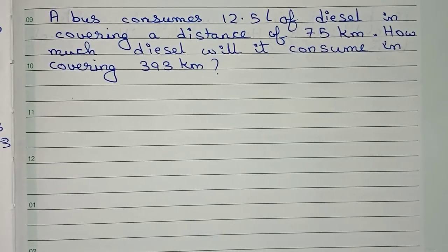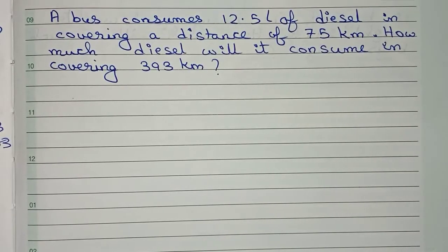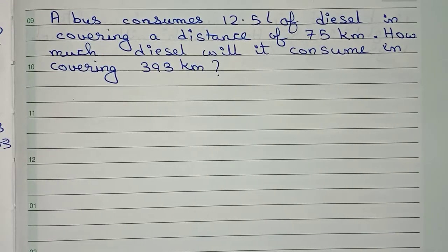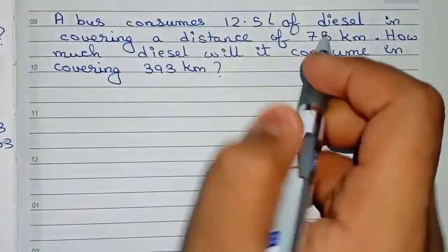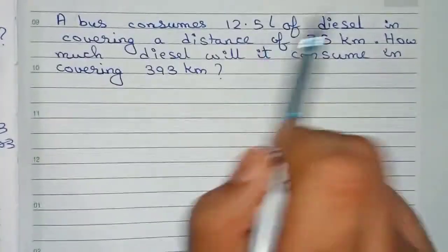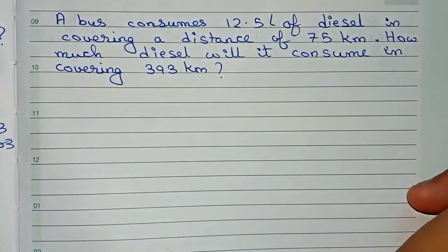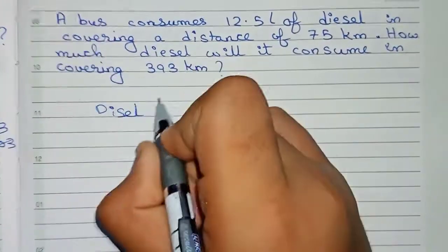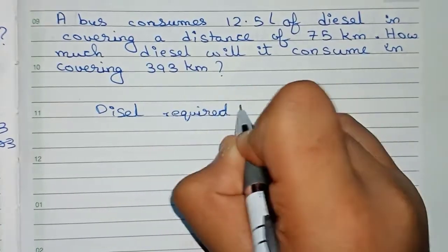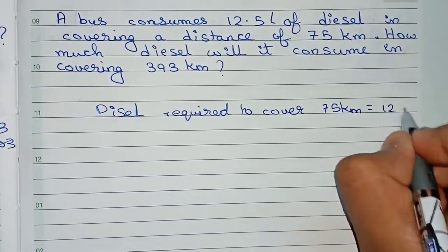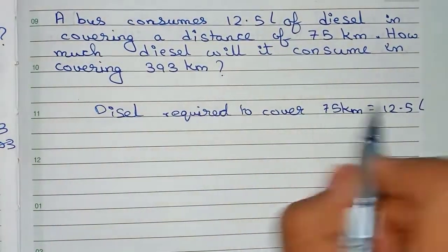Hello guys, welcome to this video. In this video we're going to solve some questions based on the unitary method concept. Our first question: a bus consumes 12.5 liters of diesel in covering a distance of 75 kilometers. How much diesel will it consume in covering 393 kilometers? In this question, we have to find the amount of diesel, so we keep the diesel at the end of the statement. The diesel required to cover 75 kilometers equals 12.5 liters.